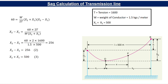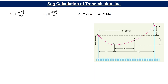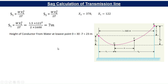Solving equations 2 and 3 simultaneously gives X2 = 378 m and X1 = 122 m. Substituting X1 = 122 into the sag formula: S1 = WX1²/2T = (1.5 × 122²) / (2 × 1600) = 7 meters. The height of the lowest point O from water level is therefore 30 − 7 = 23 meters.